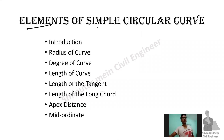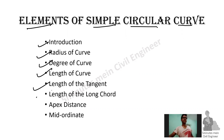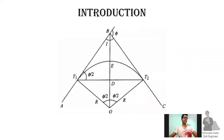Today we are going to look at the elements of a simple circular curve. First, we see the introduction, radius of curve, degree, length of curve, length of the tangent, line of long curve, apex distance and mid-ordinate.